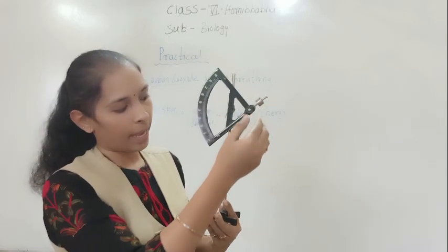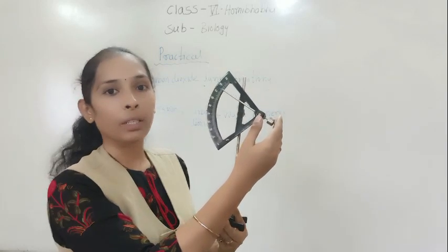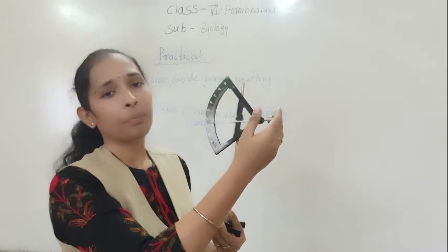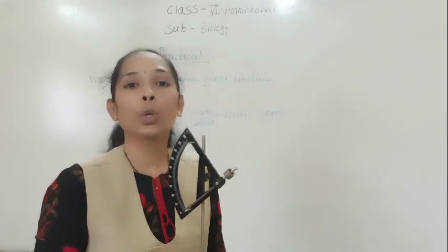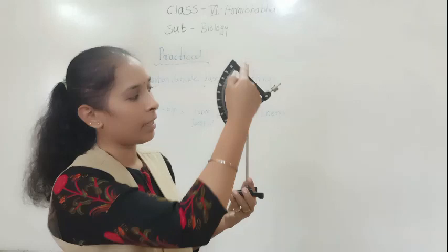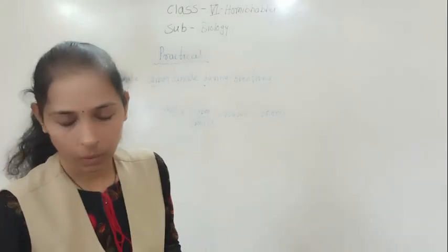So as the plant is growing, then what will happen? It is showing this movement. And in this way, what will happen, we can find out the growth of the plant. So with the help of this arc auxanometer, we can find out the growth of the plant.